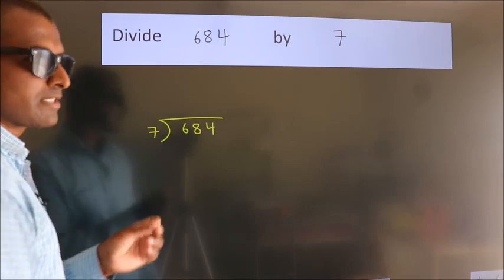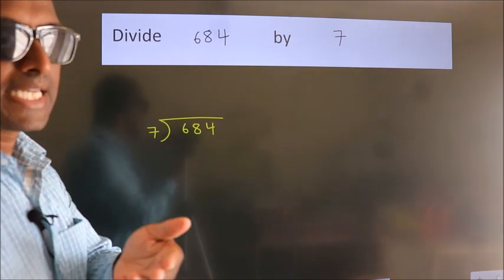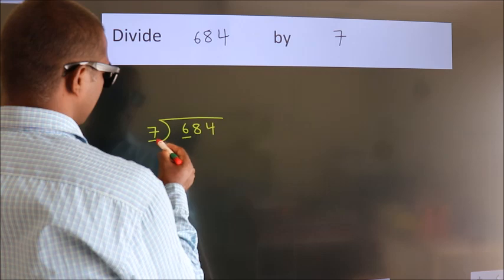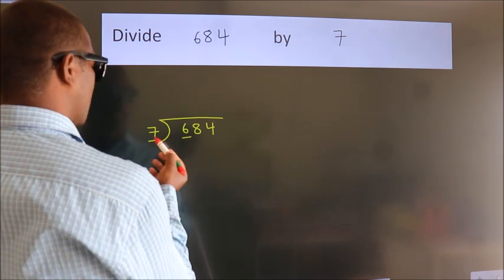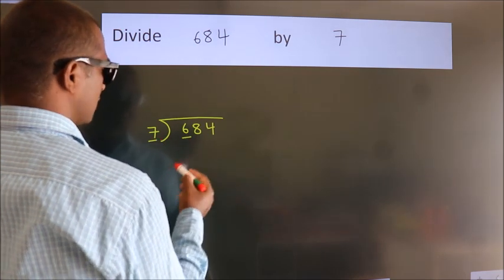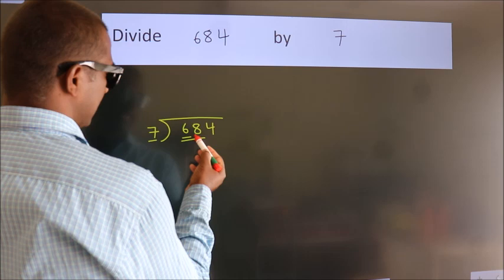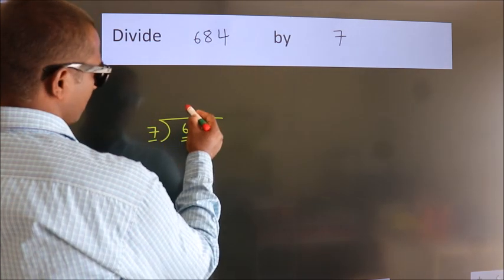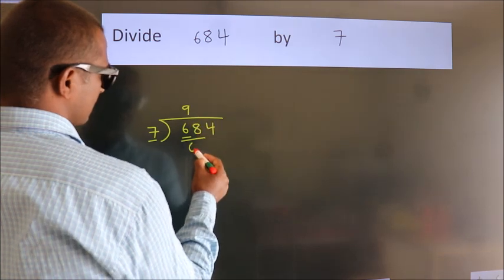This is step 1. Next, here we have 6, here 7. 6 is smaller than 7, so we should take two numbers: 68. A number close to 68 in the 7 table is 7 nines, 63.